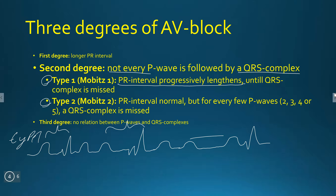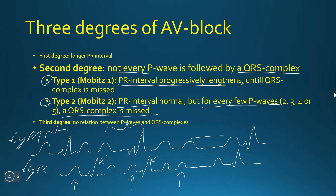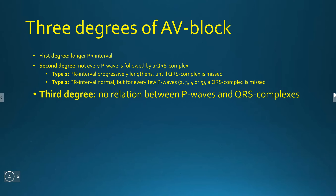Type 2 is where the PR interval is normal, but for every few P waves, a QRS complex is missed. So: P wave, QRS complex, T wave — P wave, QRS complex, T wave — P wave, no QRS complex — P wave, QRS complex. We count 3 P waves and 2 QRS complexes. So this is a Mobitz type 2 second degree AV block with a 3-to-2 ratio of P waves to QRS complexes.